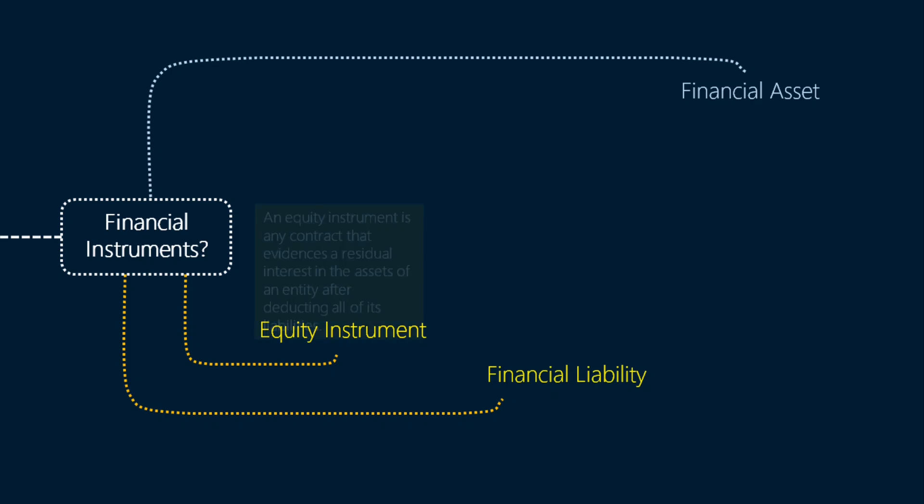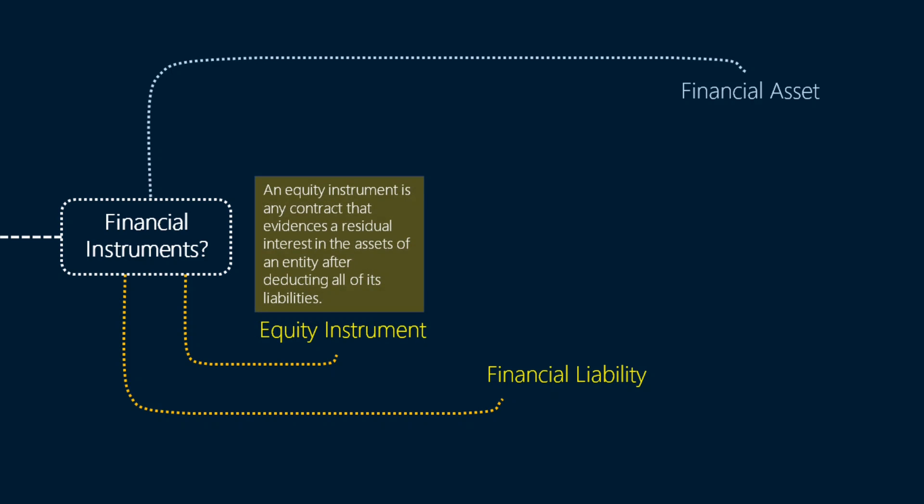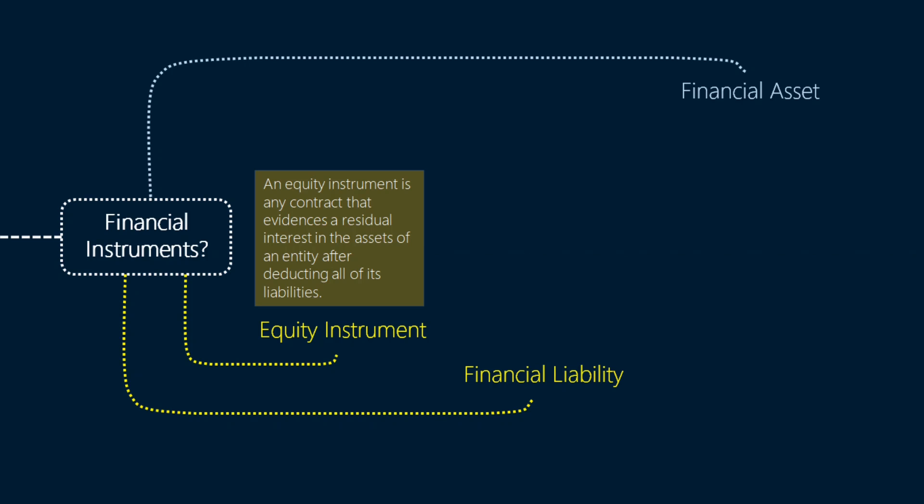An equity instrument is any contract that evidences a residual interest in the assets of an entity after deducting all of its liabilities. To the shareholder the equity instrument is an asset, but to the company issuing these shares, these same equity instruments comprise the capital of the company. So remember: for the issuing entity, the equity instruments are capital and not a liability.